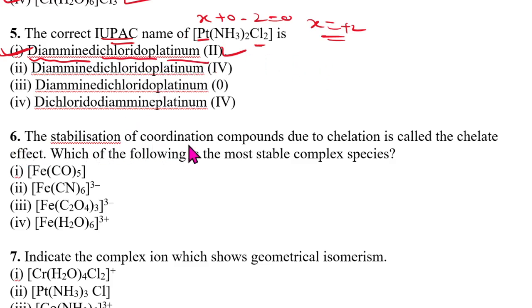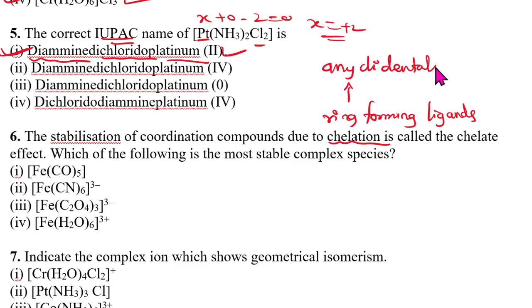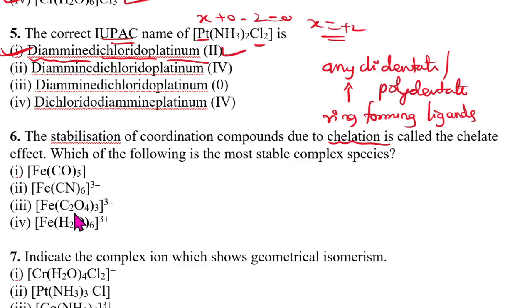Sixth question: stabilization of coordination compounds due to chelation. Chelation involves ring-forming ligands — remember, ring-forming ligands. Any didentate or polydentate ligand can form chelate rings. Out of the four options, we need to identify which is didentate or polydentate. The answer is the oxalate ligand, so the answer is option 3.